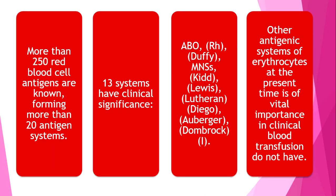Today we know more than 250 red blood cell antigens forming more than 20 antigen systems, of which 13 have clinical significance: ABO, Rh, Duffy, MNS, Kidd, Lewis, Lutheran, Diego, Auberger, Dombrock, and I. All these antigenic systems of erythrocytes are not currently important for blood transfusion because their antigen immunogenicity is not very high. But for the ABO and Rh factor systems, immunogenicity is very high.